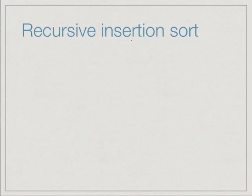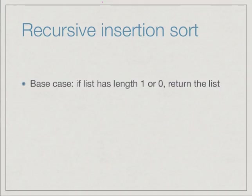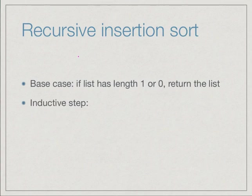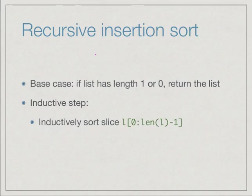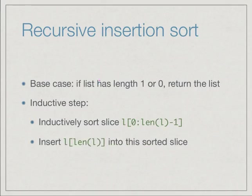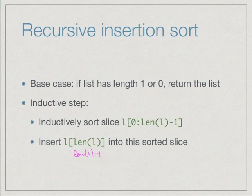Insertion sort has a very nice inductive definition. If we have a list of size 0 or 1, it is already sorted — this is the base case. Otherwise, if the list has length 2 or more, we inductively sort the slice from the beginning up to but excluding the last position (i.e., indices 0 to length-1), then take the value at the last position and insert it into that sorted slice.